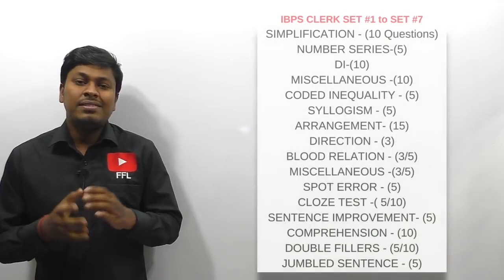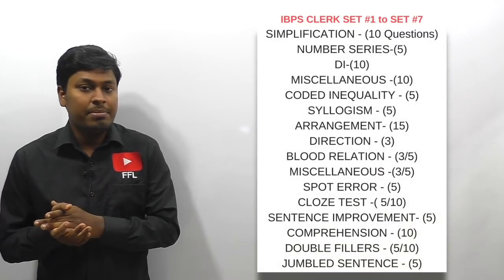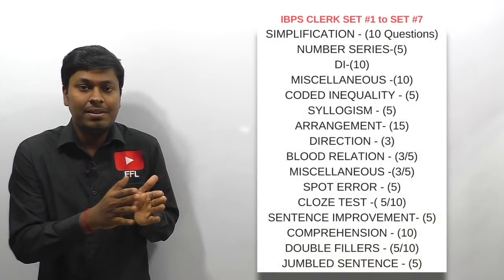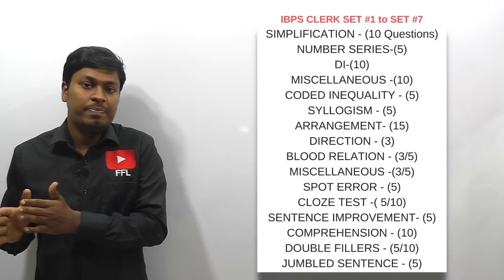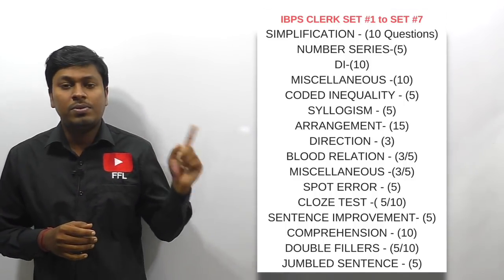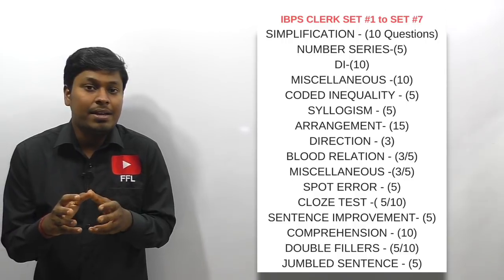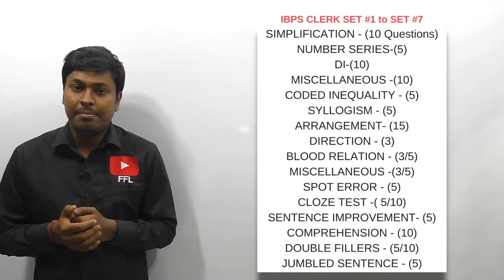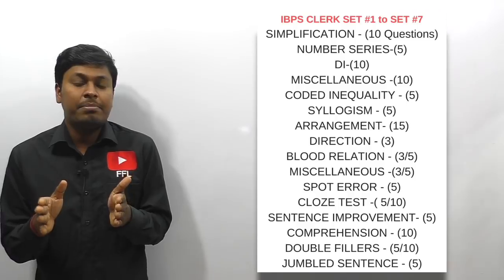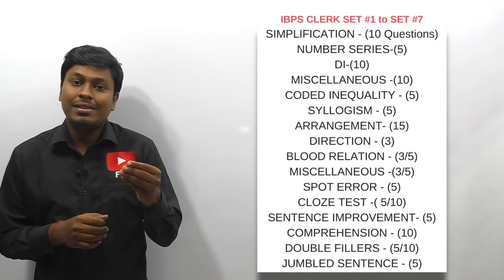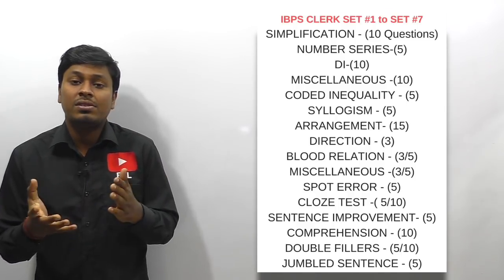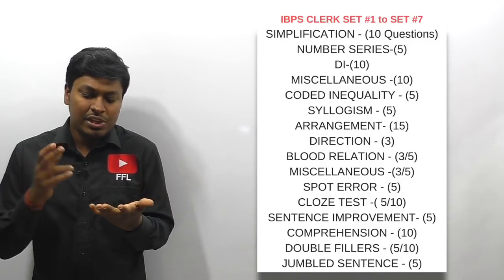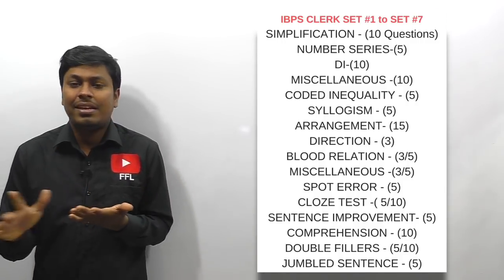The 16 question papers have been split into: the first seven, the next seven, and the last two. Set number 1 to set number 7 is based on the pattern of previous year IBPS Clerk exam. The first seven question papers are completely based on previous year IBPS Clerk pattern — for example, 10 simplification, 5 number series, and 2 DI miscellaneous questions.